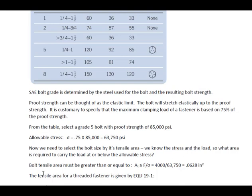So what we did here is we computed the area based on our load that each bolt has to carry and the allowable stress. So that means the tensile area for our fastener is going to be no less than 0.0628 inch squared.